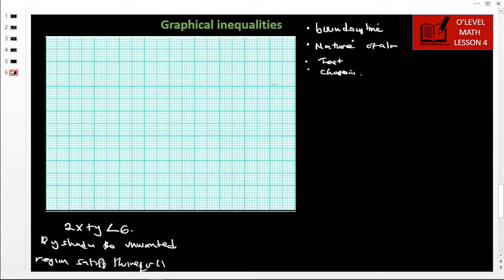Without wasting time, let us start by getting the boundary line. How do you get a boundary line? A boundary line is obtained by changing this inequality into an equation. So the boundary line is going to be 2x + y equals 6.